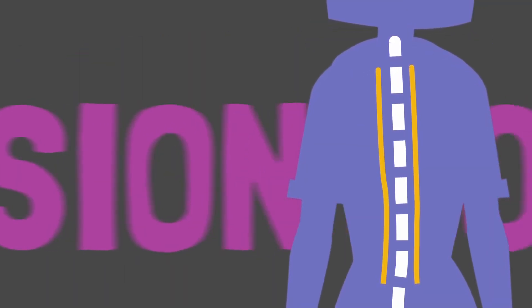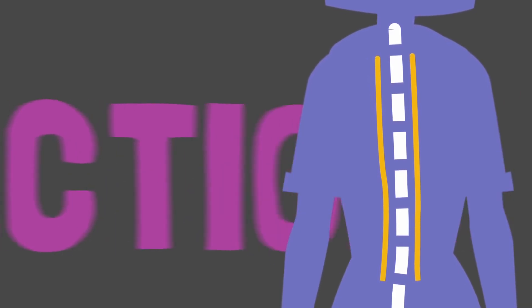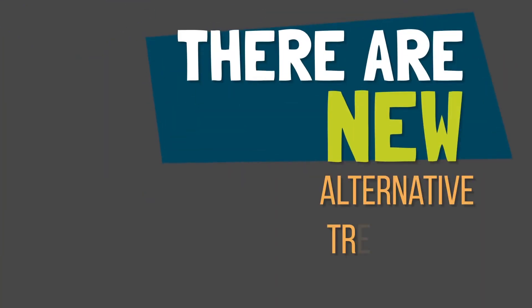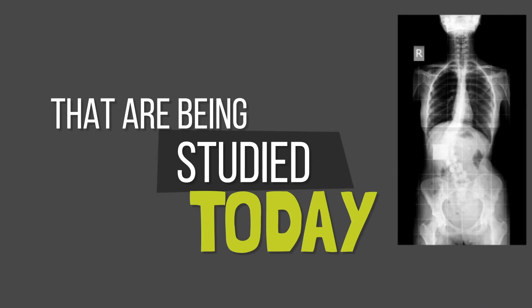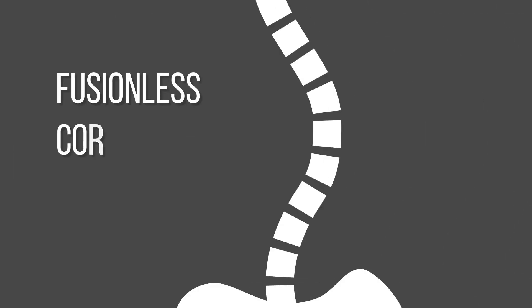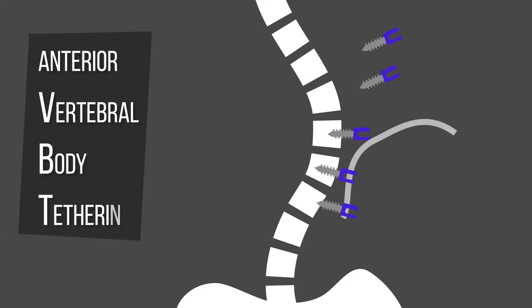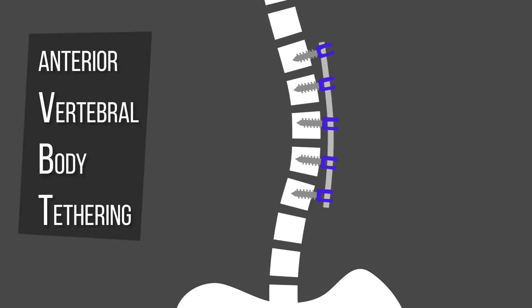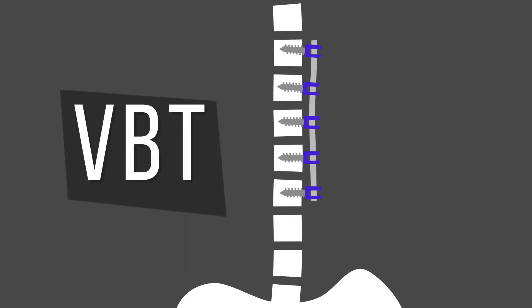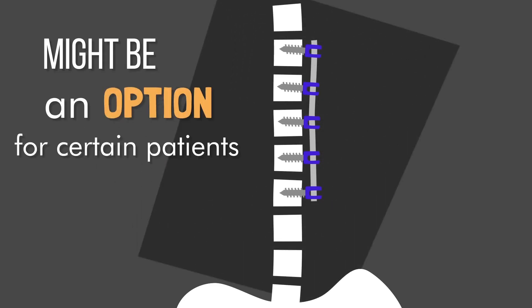Aside from the common fusion correction of scoliosis, there are new alternative treatments and techniques that are being studied today. To name one, there's a new fusionless correction technique called anterior vertebral body tethering, VBT, which may be an option for certain immature patients with worsening scoliosis.